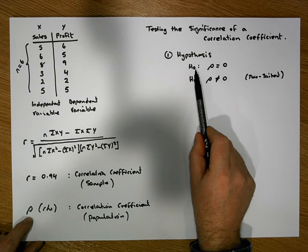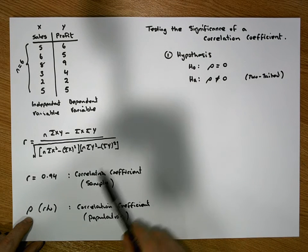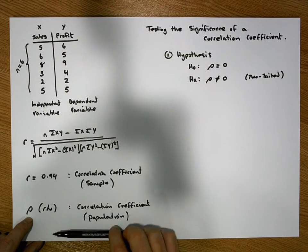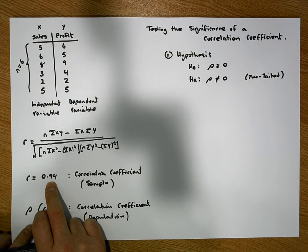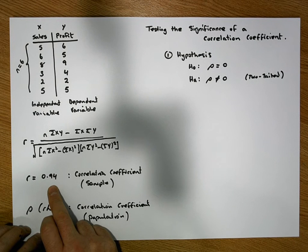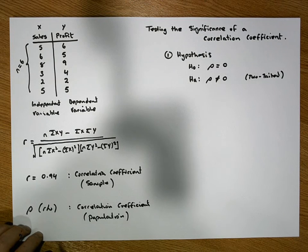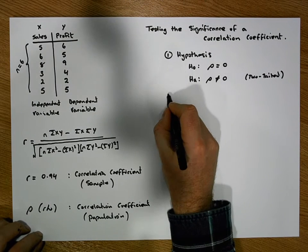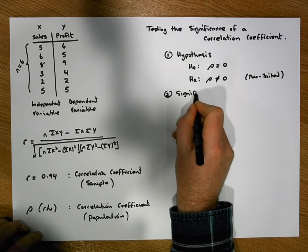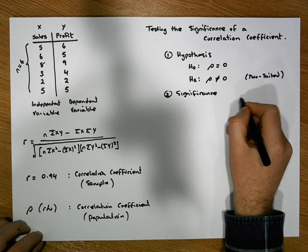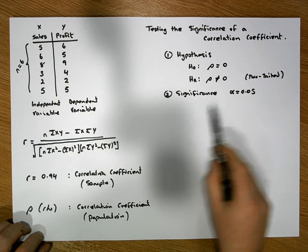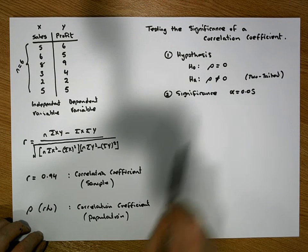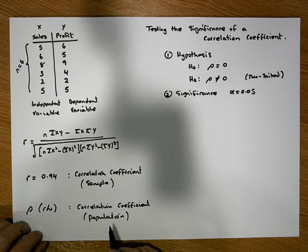To show that the null hypothesis is incorrect, we generate a sample from our population and calculate the sample correlation coefficient. The question is: is this correlation coefficient far enough away from zero to be statistically significant? Once we've defined our hypothesis, the next step is to define the significance level. We've chosen alpha equal to 0.05. Keep in mind it's a two-tailed test, so this alpha is split across both the left tail and the right tail.